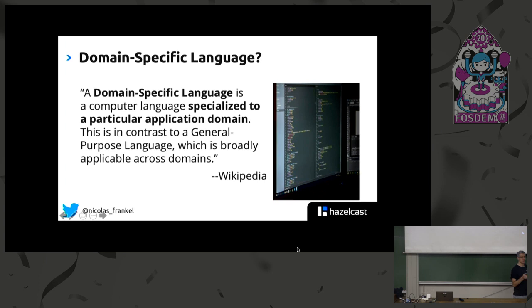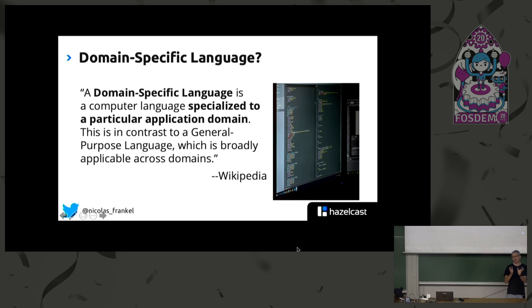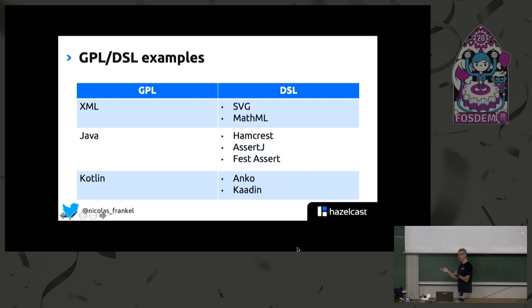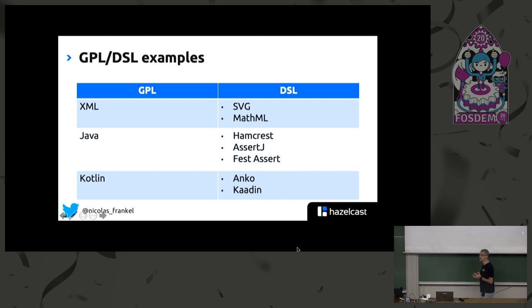You might have heard already about domain-specific languages. A couple of years ago they were very, very hot — I think there's even an O'Reilly book about them. Basically, a domain-specific language narrows the scope and features of a general-purpose language in order to guide you and make development on that narrow scope much easier. For example, we can think of XML as a general-purpose language, even though it's not really a language, and then you can create narrower-scope languages such as SVG on top of XML. In Java, DSLs used for assertions are popular — Hamcrest, then AssertJ.